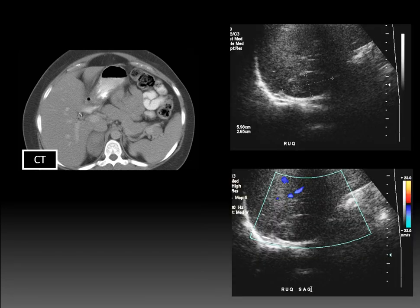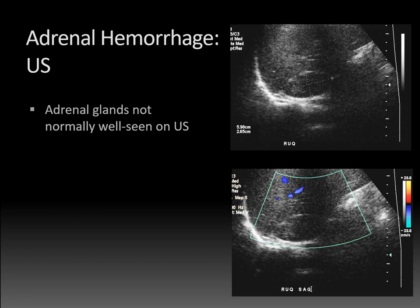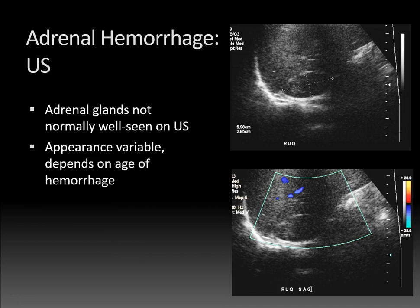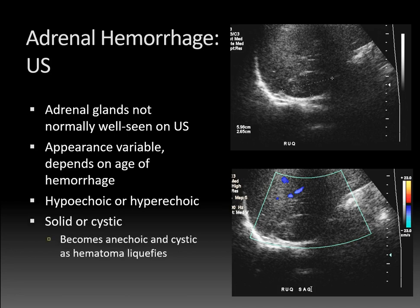What about ultrasound for adrenal hemorrhage? This patient had a right upper quadrant ultrasound prior to the CT scan, and you can see there's a six-centimeter ovoid well-circumscribed solid-appearing mass in the region of the right adrenal gland. On the lower image showing color Doppler, there's no flow within the lesion, so it's avascular. On ultrasound, adrenal hemorrhage appearance is variable depending on the age — it could be hypoechoic or hyperechoic, solid or cystic. Hemorrhage will become anechoic and cystic as the hematoma liquefies.